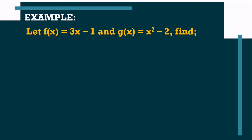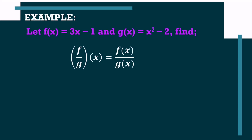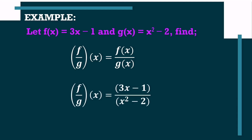Now, for the quotient of the given functions. First, we write the notation: f divided by g of x is equal to f of x divided by g of x. Substitute the values of each function — f divided by g of x is equal to 3x minus 1 divided by x squared minus 2. If you remember, in dividing polynomials, we need to perform factoring methods to find out if they have similar terms that we can cancel out. In this example, the values of f of x and g of x are called prime, meaning we cannot factor them into polynomials of lower degree. Therefore, this is already the answer.